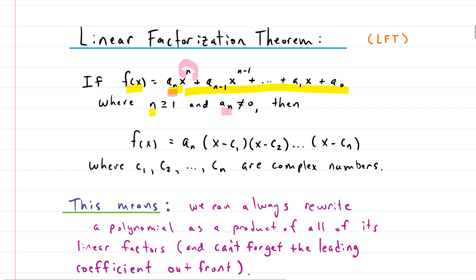number a_n, the leading coefficient, is not zero, then the Linear Factorization Theorem says that you can rewrite f as a product of all of the roots or solutions of the polynomial - so in other words, x-intercepts.